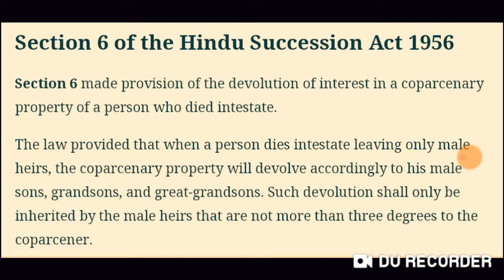If someone has died, we talked about the property going to male heirs. Why will it go to male heirs? Because we thought that the coparceners are only male heirs — those not more than 3 degrees to the coparcenary.